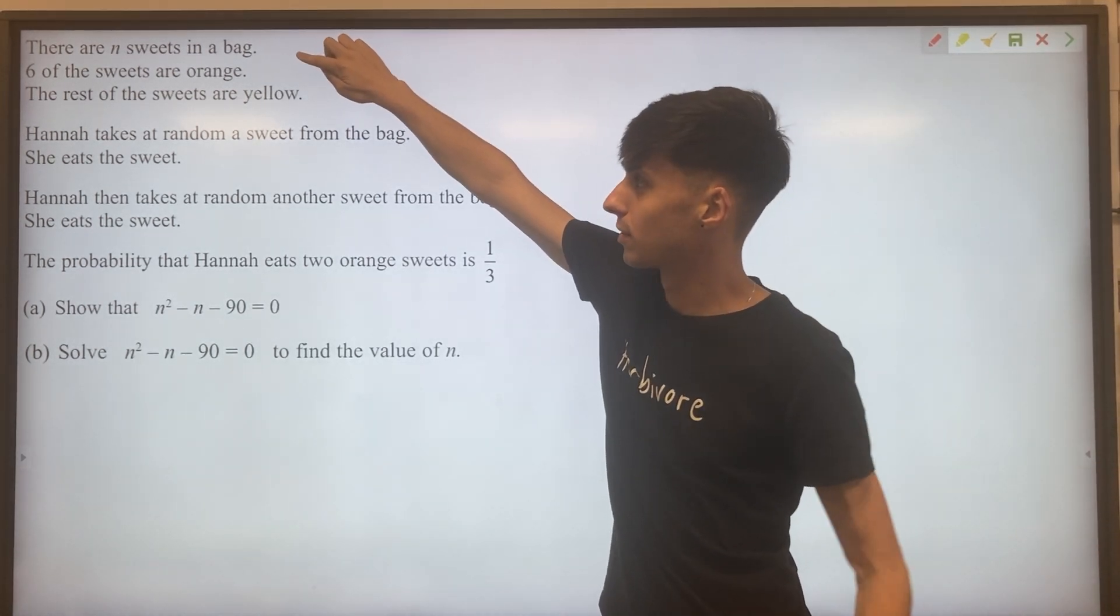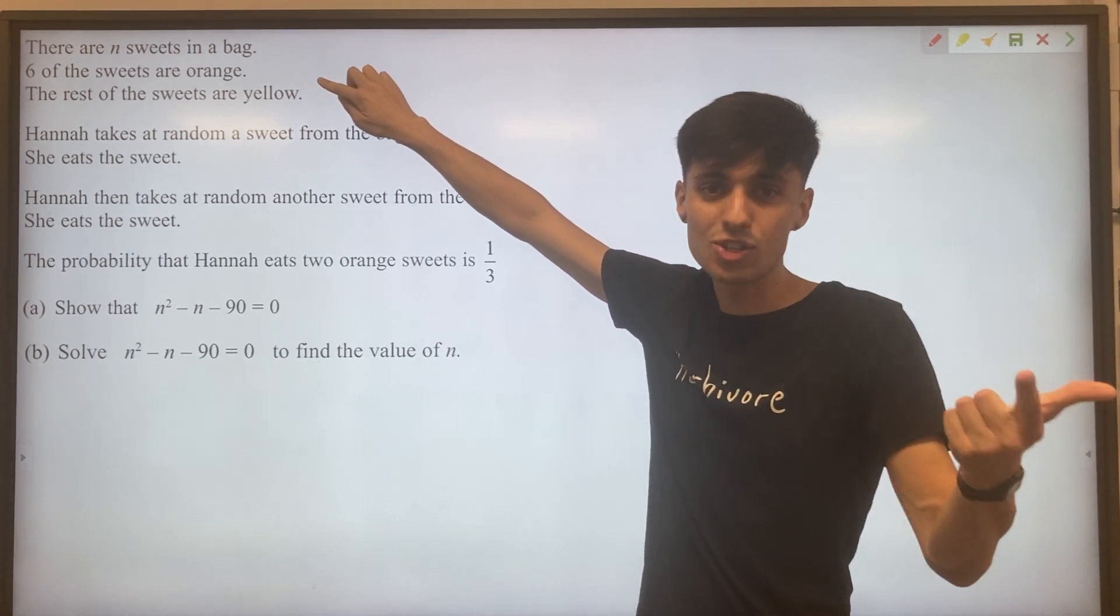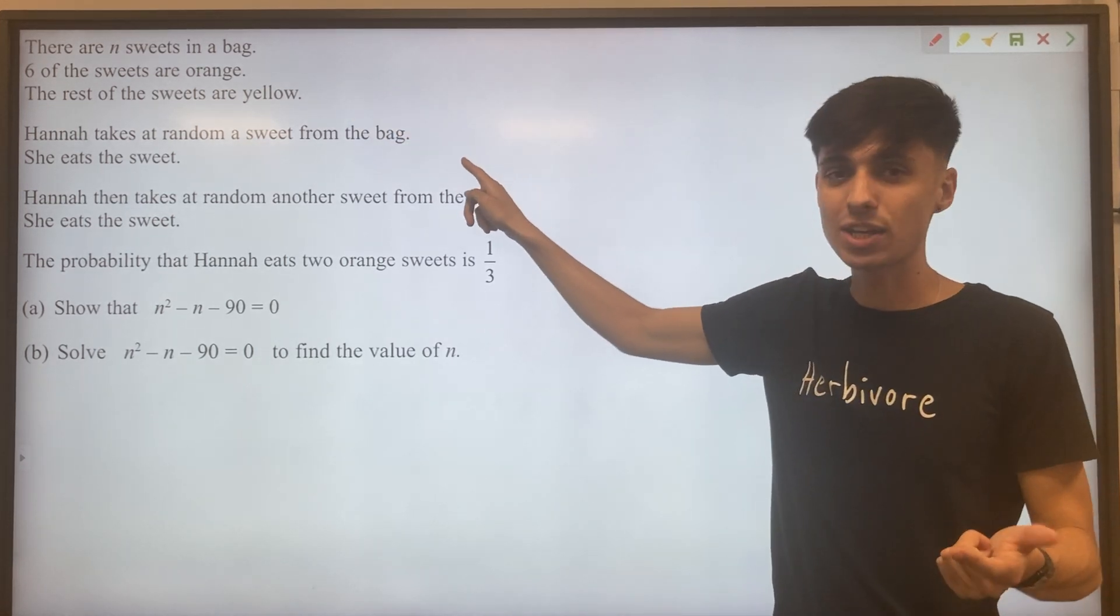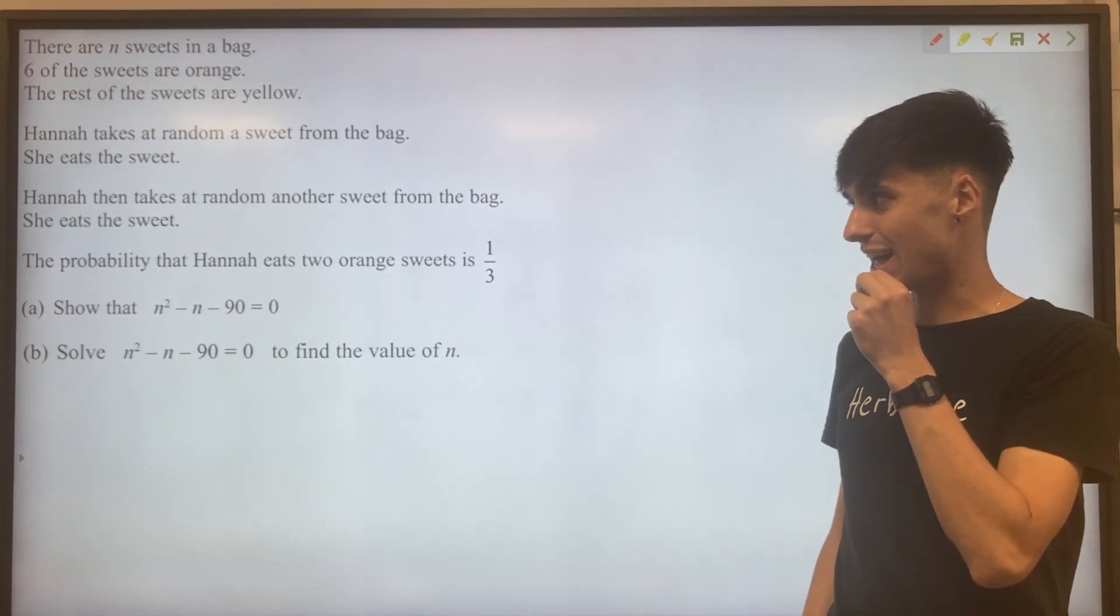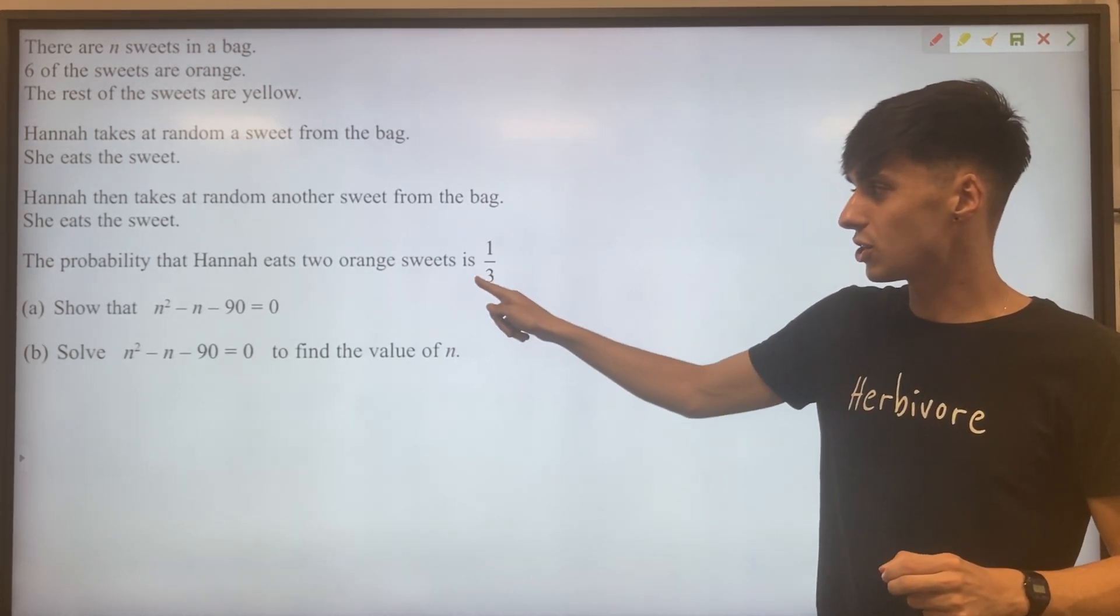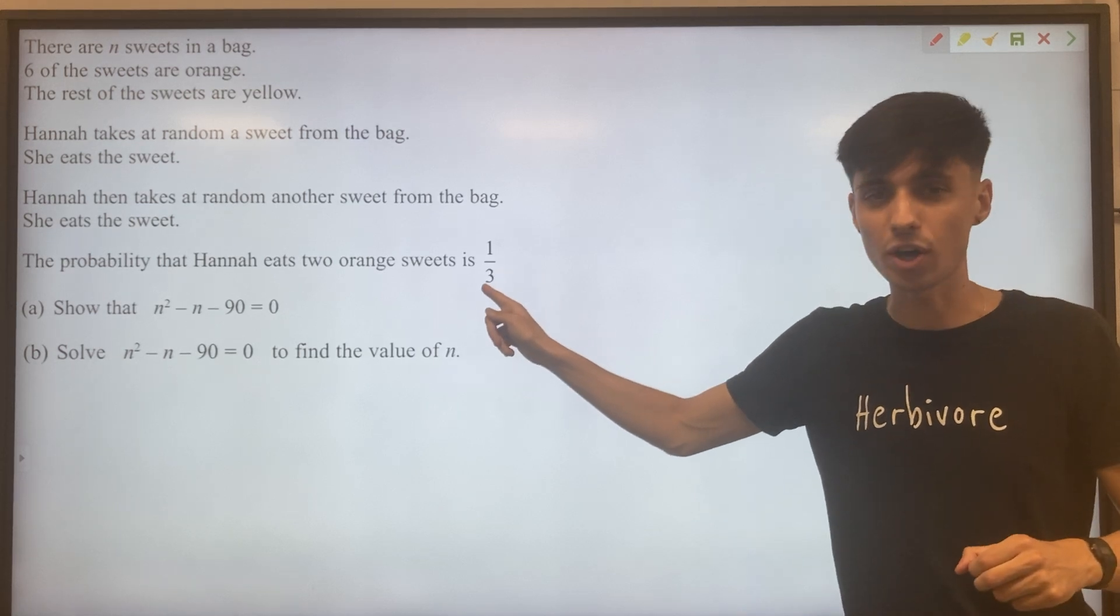We've got N sweets in a bag. Six orange, the rest are yellow. Hannah takes a sweet from the bag, she eats it. She takes another sweet, eats that. The probability she eats two orange sweets is one third.